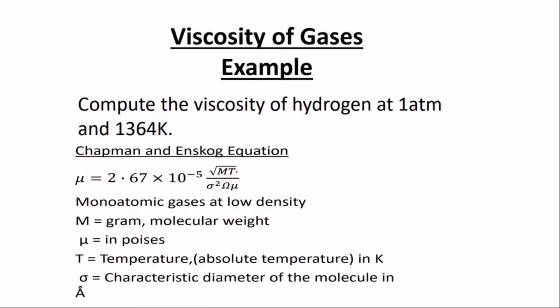the molar weight times the temperature in Kelvin, all over the characteristic diameter times the collision integral from the viscosity table. The units are: M is in grams per mole (molar weight), viscosity is in Poise, and T is the absolute temperature in Kelvin.